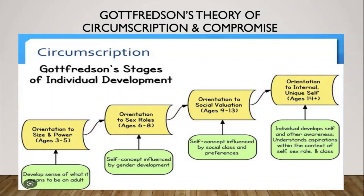The next stage is the orientation to social evaluation, and based on this theory it happens between the ages of nine and 13. As children become teenagers, they start to see the value of certain jobs and what those jobs provide. They also start noticing differences based on the job and the social status. They may rule out careers that are considered lower on the social status and may want to pursue careers that are higher up.